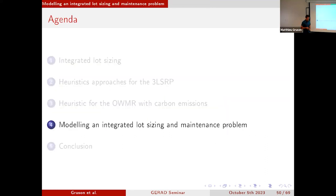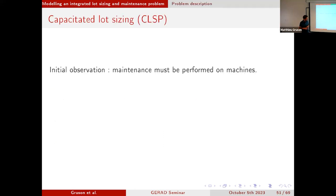The last project I'm going to talk about is a more recent one on integrated lot sizing and maintenance, done with Arsenal, Julien Legrave, and François Lamont. In this project, the initial statement is that you have machines to produce some items and you must perform some maintenance operations at some point — it's impossible to use your machines all the time.